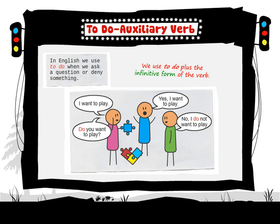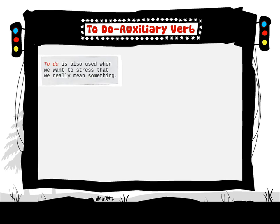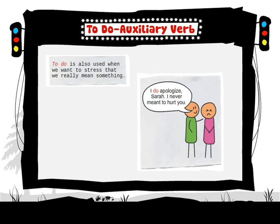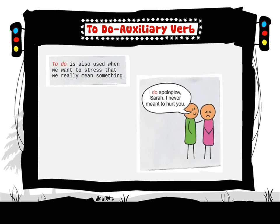We use 'to do' plus the infinitive form of the verb. To do is also used when we want to stress that we really mean something. For example: I do apologise, Sarah. I never meant to hurt you.